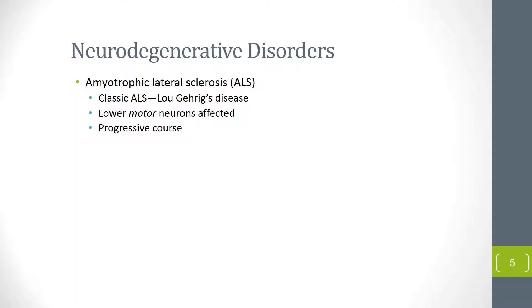Amyotrophic lateral sclerosis is one of the most devastating neurodegenerative diseases, also known as Lou Gehrig's disease after the famous baseball player. It typically affects people in their 50s and 60s. The disease is very progressive — from the time of symptom onset, it typically takes approximately two to five years to death.